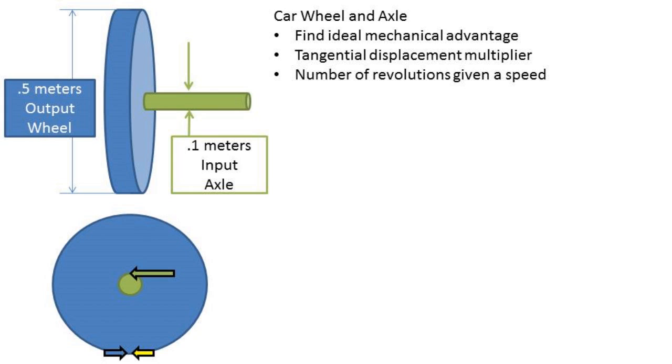A wheel and axle is basically two cylinders, a large cylinder or wheel marked in blue in this slide, and a smaller cylinder or axle marked in green on this slide. In this example, the axle is where the force is coming from, so it is the input, and its diameter is 0.1 meters. The wheel is the output, and it has a diameter of 0.5 meters.